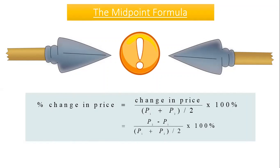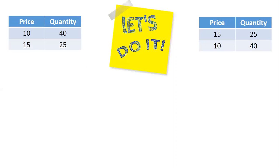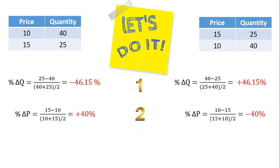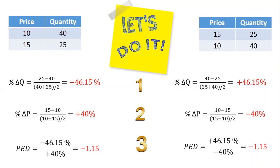You can practice this with the same three steps. The percentage change in Q uses the denominator (40 + 25) / 2, and in both directions the result will be the same. The percentage change in price similarly uses the average as denominator. As a result, whether you go from price 10 to 15 or from 15 to 10, you will obtain the same price elasticity of demand.